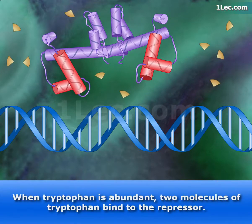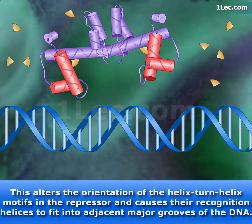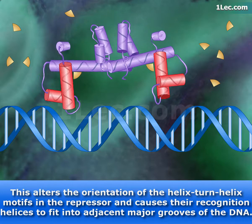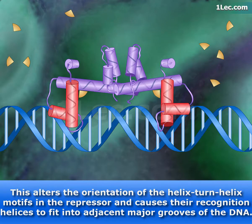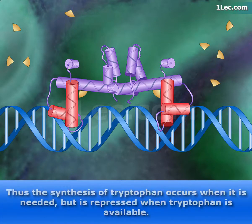When tryptophan is abundant, two molecules of tryptophan bind to the repressor. This alters the orientation of the helix-turn-helix motifs in the repressor and causes their recognition helices to fit into adjacent major grooves of the DNA. Thus, the synthesis of tryptophan occurs when it is needed, but is repressed when tryptophan is available.